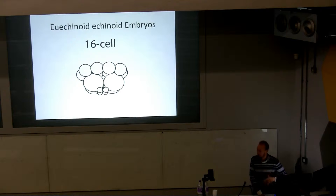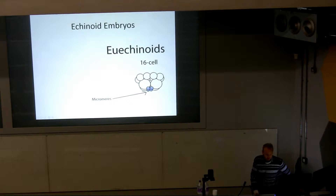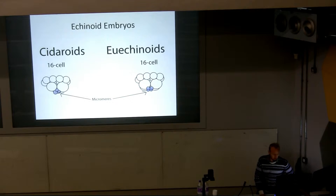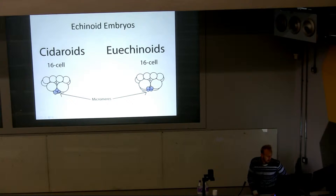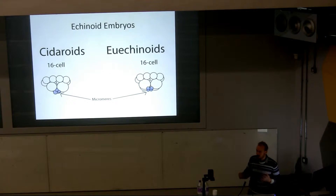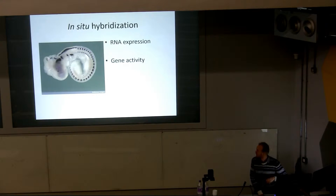I need to talk a little about echinoid embryology. This is a 16-cell euechinoid embryo. The most important things for today are these guys at the vegetal pole—the micromeres, they're small, thus micro. We have two major subclasses of echinoids in the post-Paleozoic: cidaroids and euechinoids. Cidaroid micromeres are irregular in number and size—anywhere from zero to four—whereas in euechinoids we always have a consistent four at the vegetal pole.